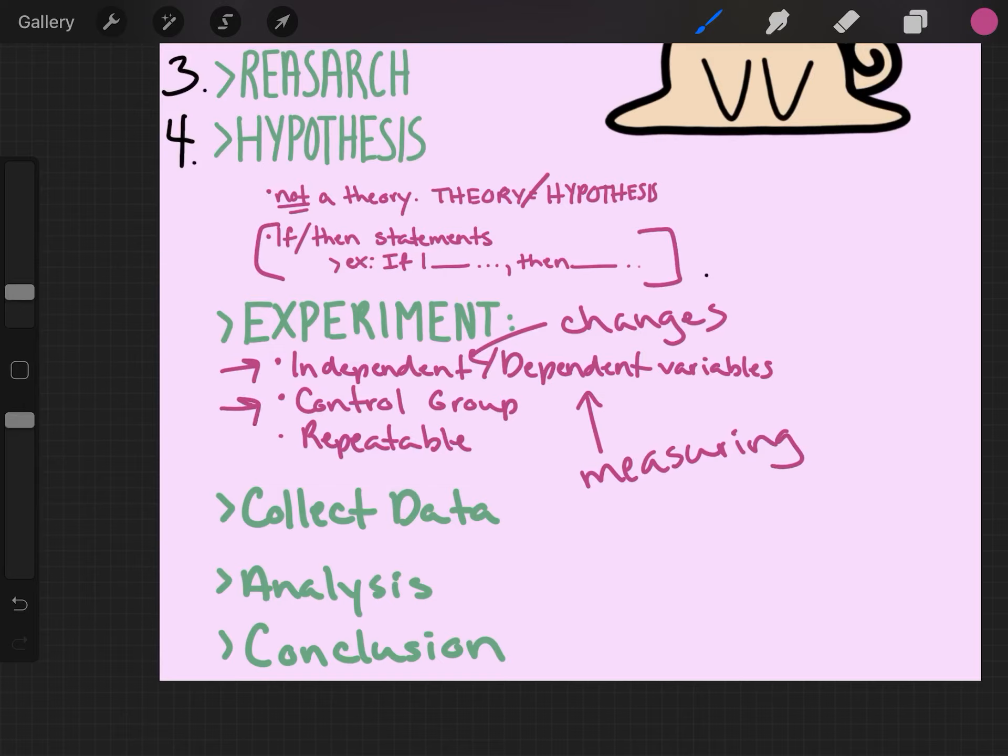You must also have a control group, something that you don't do anything to, to see how it reacts. If you are testing like different fertilizers that make grass grow, you are going to have one that has no fertilizers to see how fast that grass grows. In our case with our chocolates, this would be perhaps the off-brand, something like Great Value that melts.